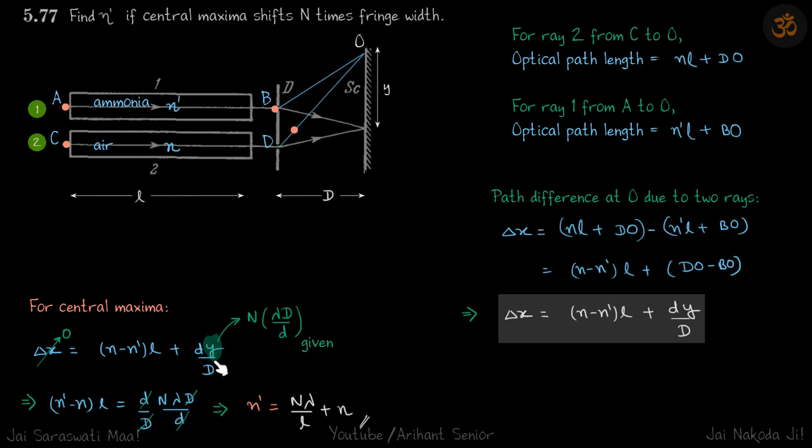And in the problem, they have given that central maxima shift N times fringe width. So Y is N times fringe width. Fringe width is lambda D by d. So we put that and you will see that capital D and small d both will get cancelled. And we'll get our answer n' is equal to N lambda by L plus n.